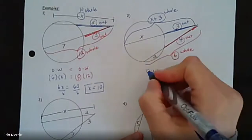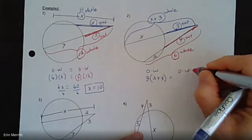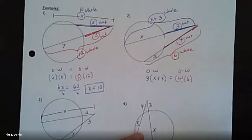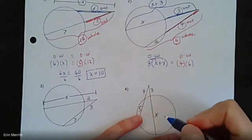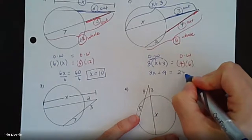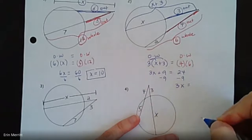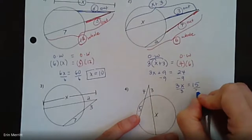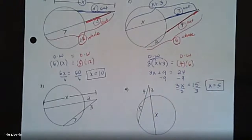When we come down here and do outside times the whole, that would be 3 times (x plus 3), and then over here when we do the outside times the whole thing, that would be 4 times 6. All that matters is that you get the right pieces put together. Don't forget you do have to distribute when you've got a set of parentheses and a binomial here. So this is 3x plus 9. 4 times 6 should be 24. Subtract the 9 over, so 24 minus 9—feel free to use a calculator if you need it—should be 15. Divide by 3, and x comes out to be 5.